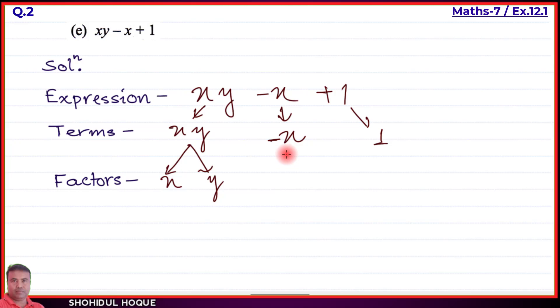The second term -x has factors -1 and x. The third term is 1. Part (e) is solved.